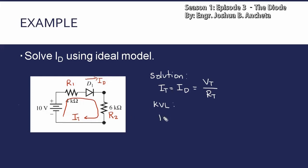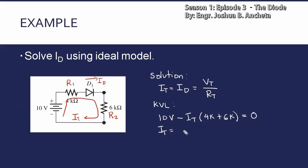From Kirchhoff's voltage law, magsimula tayo sa 10 volts, and then minus the total current of Ip — dalawa yung dadaanan niyang resistances, yung R1 — 4 kilo ohms — plus 6 kilo ohms. And then since ideal model to, the voltage drop across the diode is zero. So this is now equal to zero. Then solving for Ip, this is equivalent to 10 volts over 10 kilo ohms — so this is 1 milliampere. Therefore yung hinahanap nating ID, this is also equivalent to 1 milliampere.